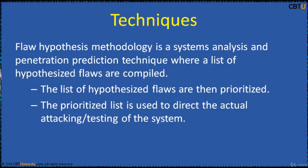Flaw hypothesis methodology is a system analysis and penetration prediction technique, where a list of hypothesized flaws in a software system are compiled through the analysis of specifications and documentation for the system. The list of hypothesized flaws are then prioritized, and the prioritized list is used to direct the actual attacking or testing of the system.